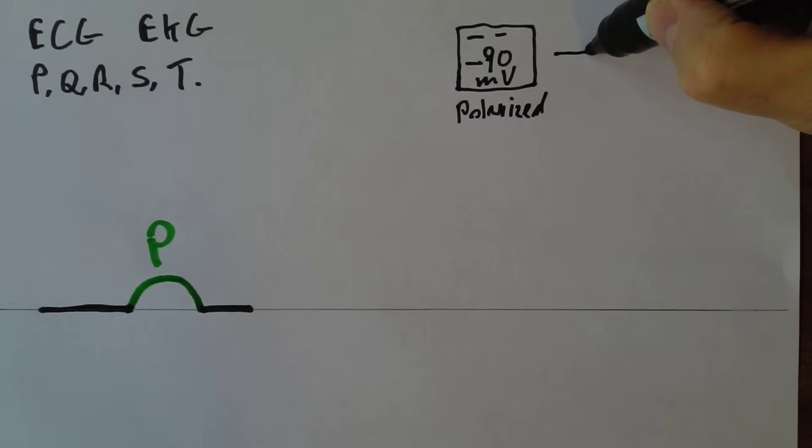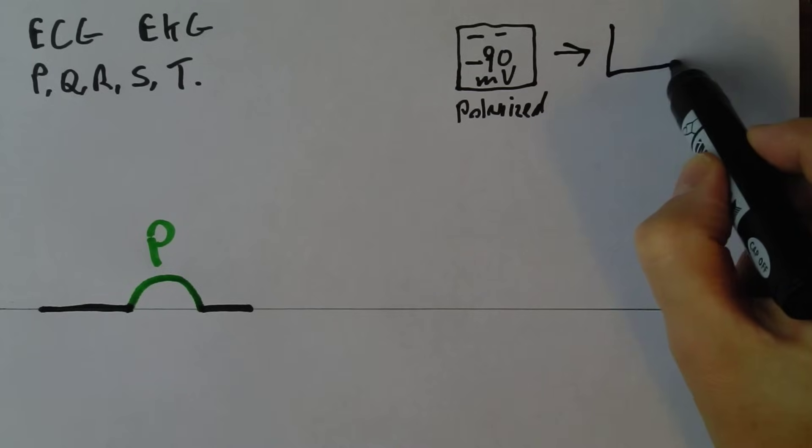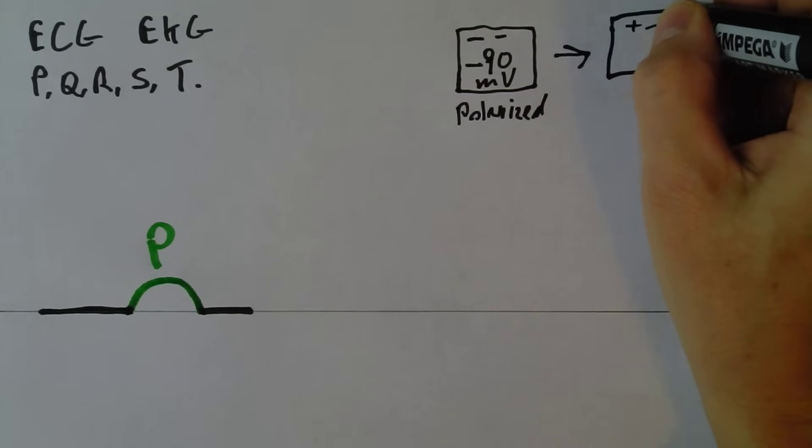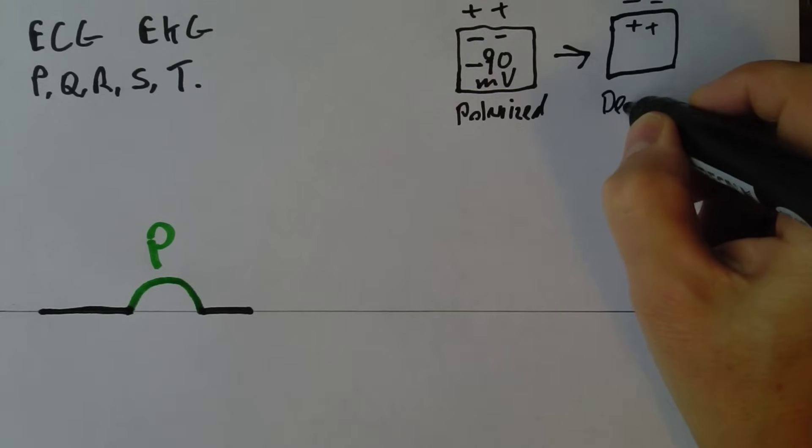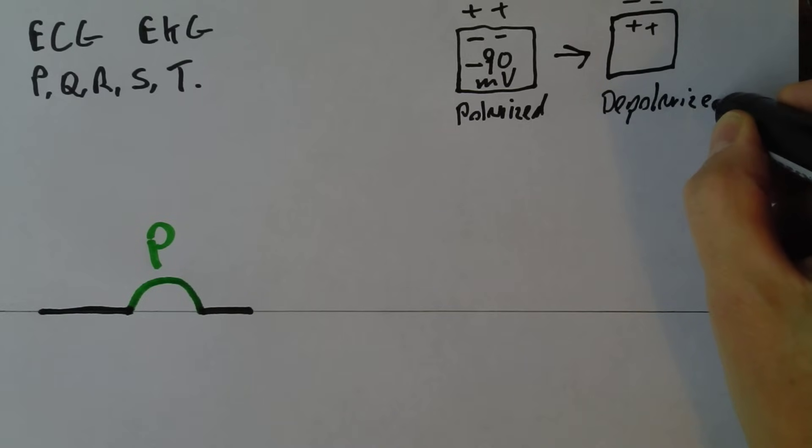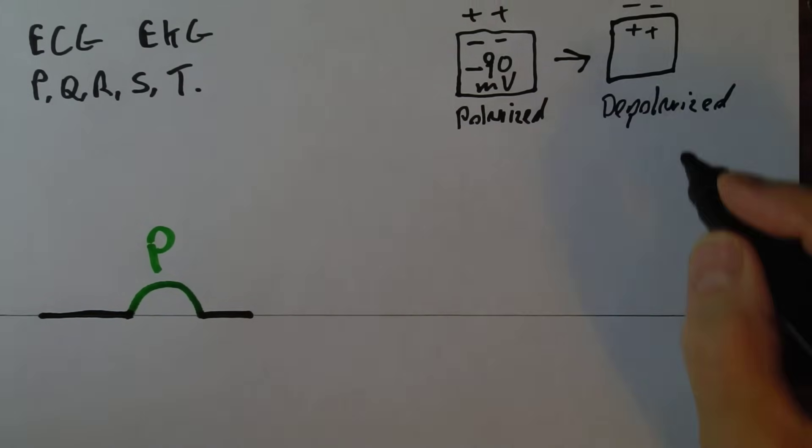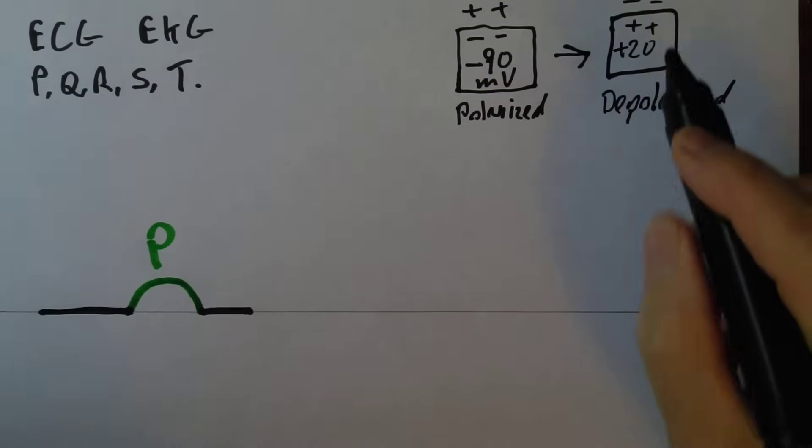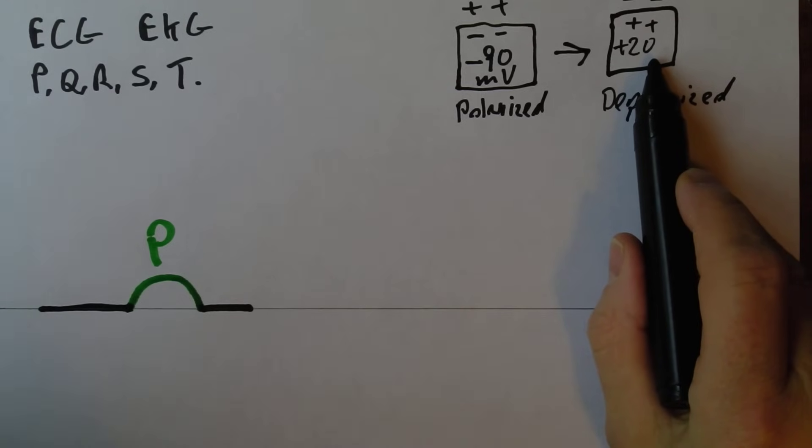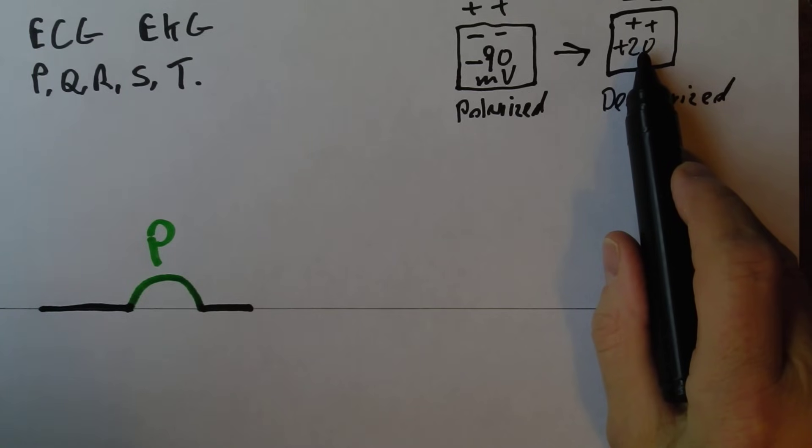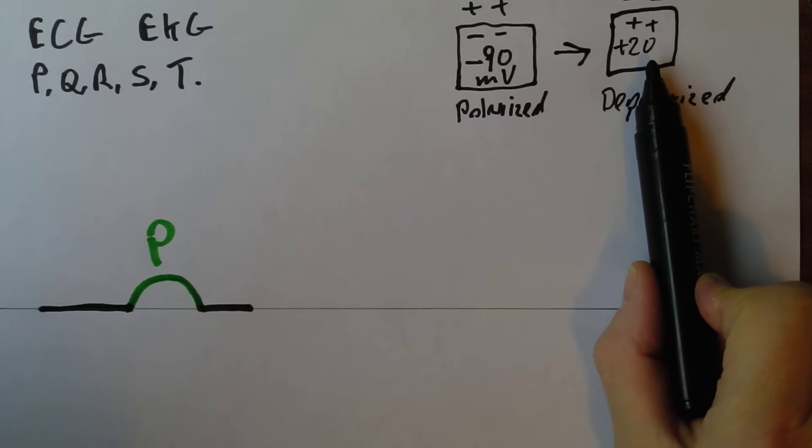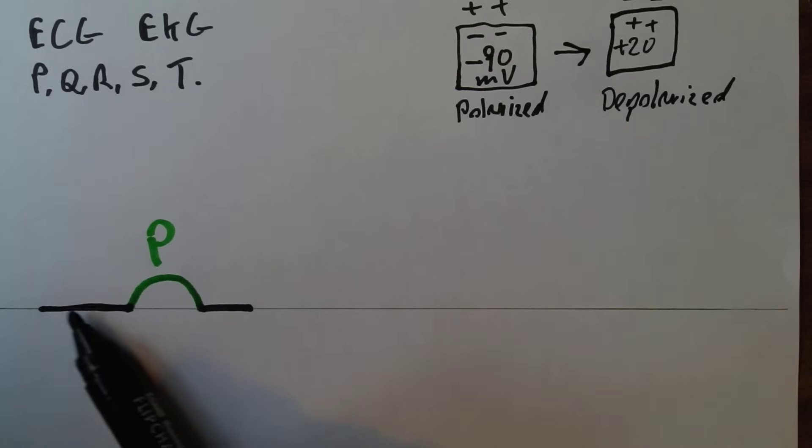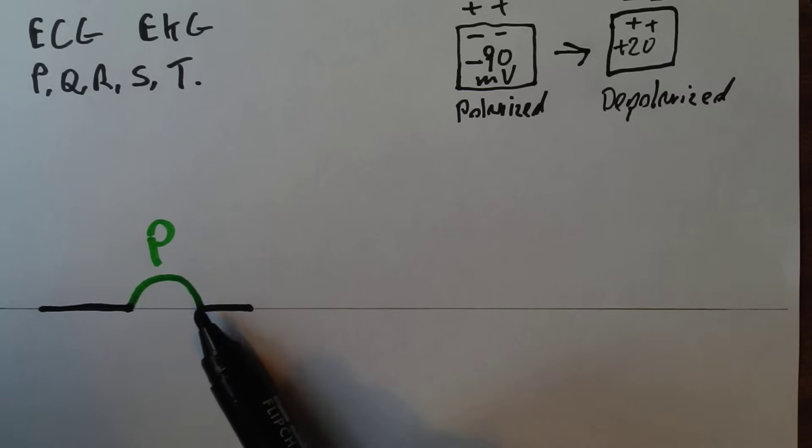But then when it depolarises that's all going to change. So when it depolarises it changes to become positive on the inside and negative on the outside. The depolarised position is the opposite. That is depolarised and it'll actually depolarise to about plus 20 inside for a period of time and then it'll be about plus 10. And the important thing about this is that it's the change from being polarised to being depolarised that initiates the muscle contraction. That's what triggers the initial muscle contraction.